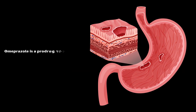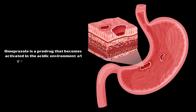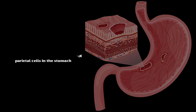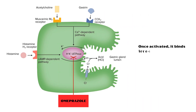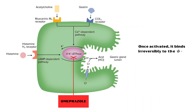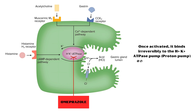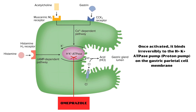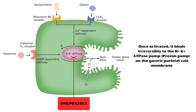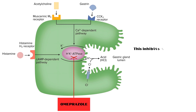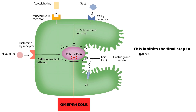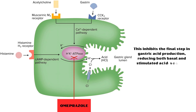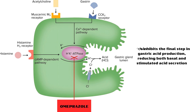Omeprazole is a pro-drug that becomes activated in the acidic environment of parietal cells in the stomach. Once activated, it binds irreversibly to the H+K+ATPase pump, also known as the proton pump, on the gastric parietal cell membrane. This inhibits the final step in gastric acid production, reducing both basal and stimulated acid secretion.